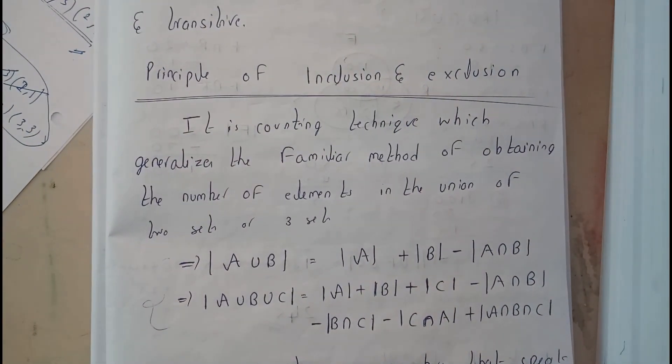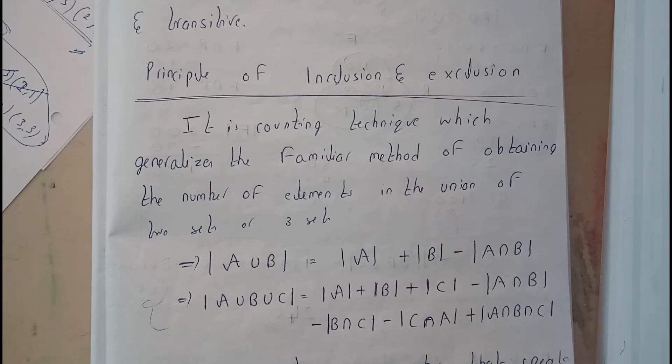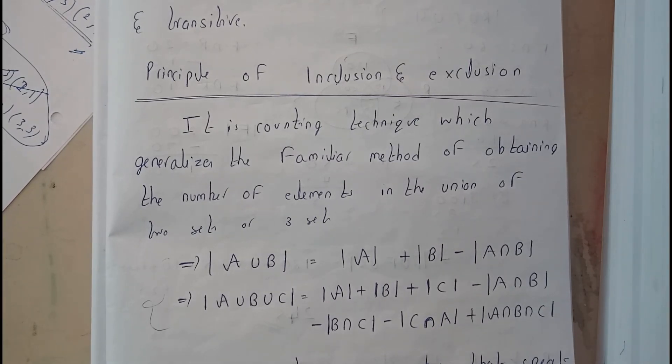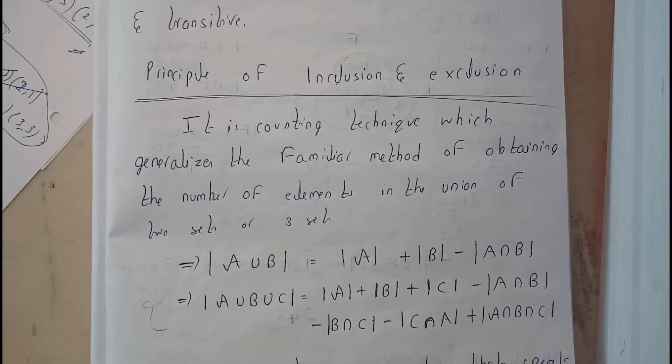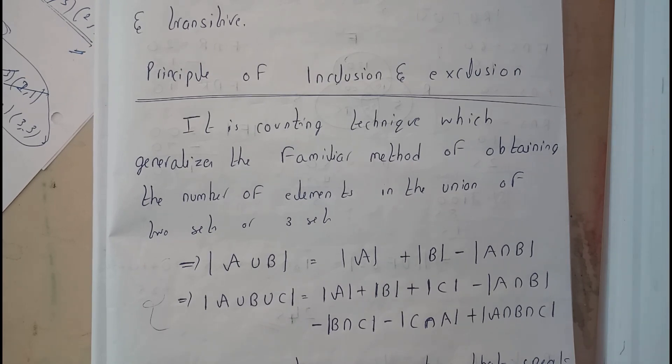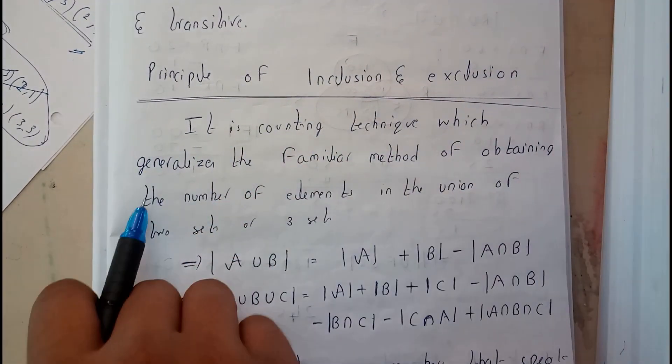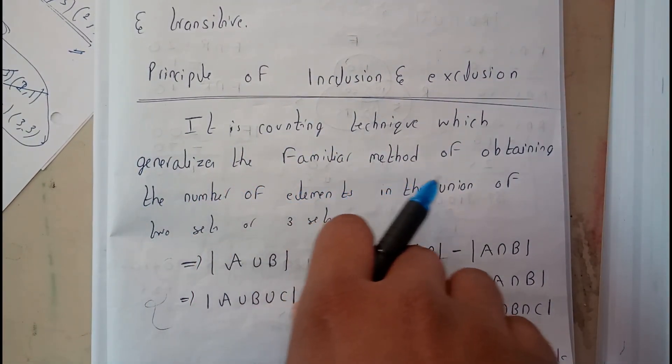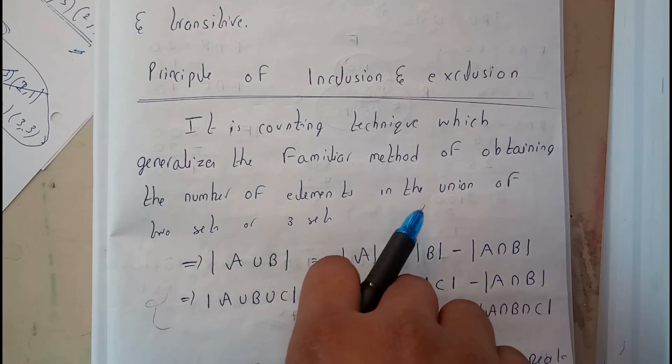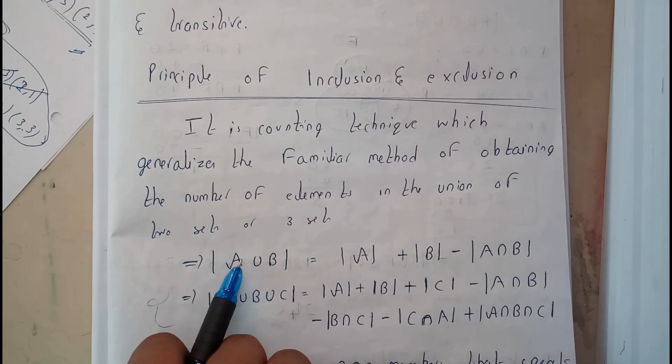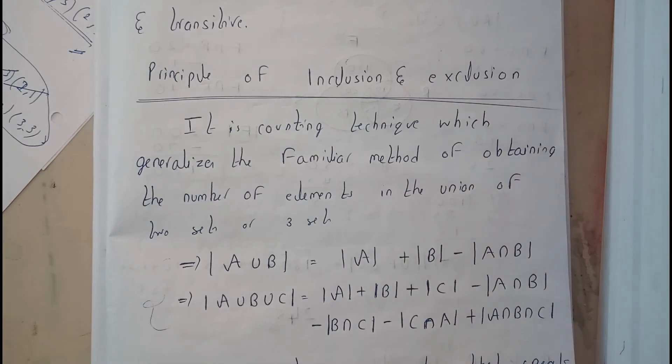This is one of the main topics in this whole chapter. I have already covered this topic in the first chapter, and we are just revising it once here. It basically consists of sets. I've covered sets already in the first chapter. So it is a counting technique which generalizes the familiar method of obtaining the number of elements in the union of two or three sets.